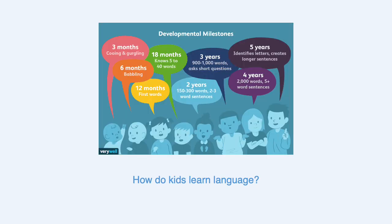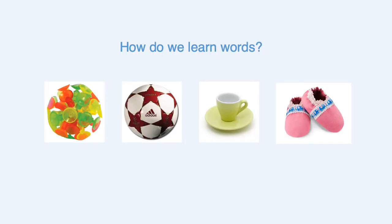We ask how kids learn language, what strategies they use, and when they learn language. For example, we look at word learning. If I were to ask you to point to the blicket, you would probably point to the object on the far left. But how would you actually know that that's a blicket when you've probably never heard it before or seen the object? What strategy is going on here?